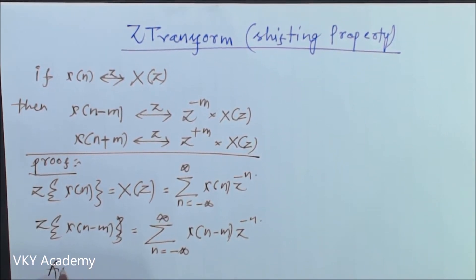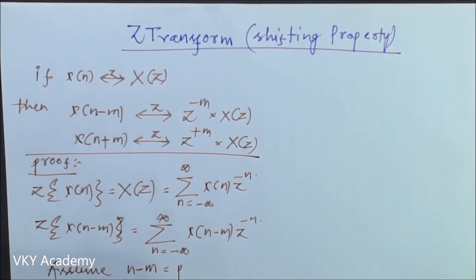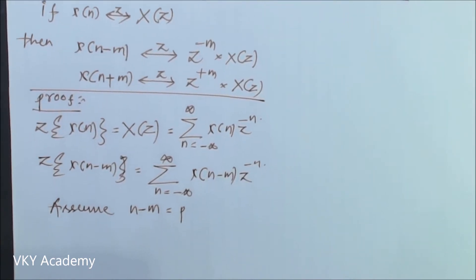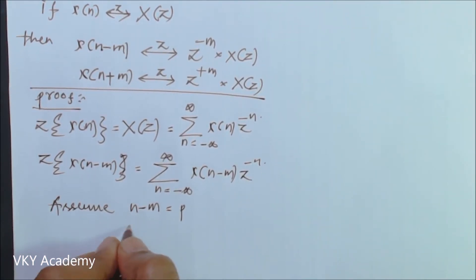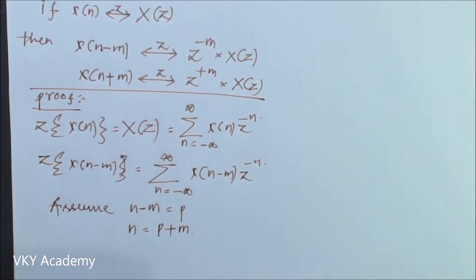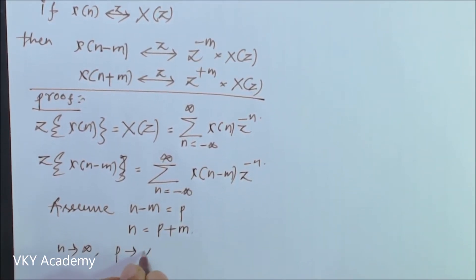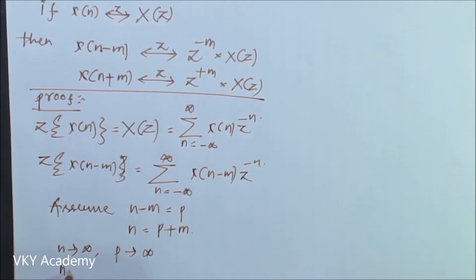Now assume n minus m is equal to p. Then n will be equal to p plus m. If n tends to infinity, p tends to infinity, and if n tends to minus infinity, p tends to minus infinity.